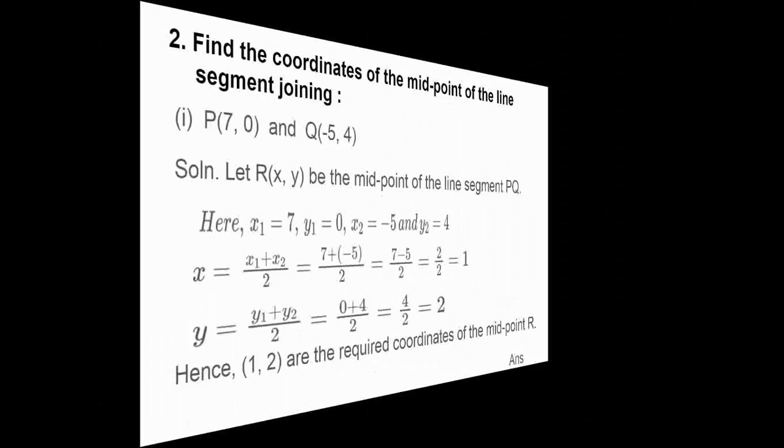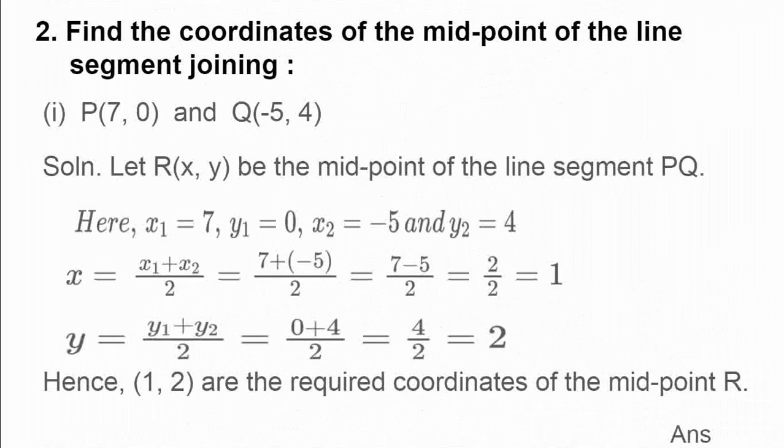First of all, I have written, let R(x, y) be the midpoint of the line segment PQ. Here, x1 equal to 7, y1 equal to 0, x2 equal to -5, and y2 equal to 4. m1 equal to m2, it is not given, because these 2 ratios, they are same. So, automatically, the formula is changed without m1 and m2. The formula is x equal to x1 plus x2 divided by 2.